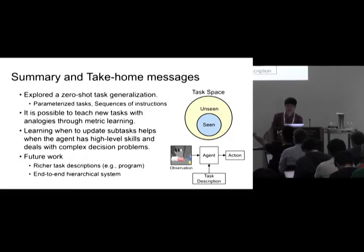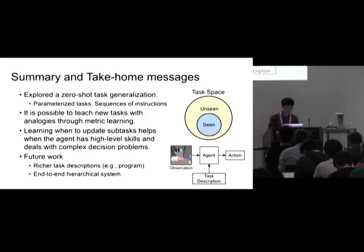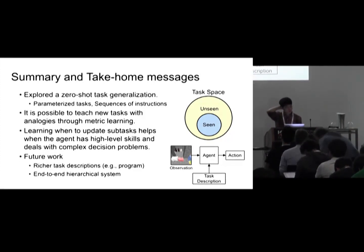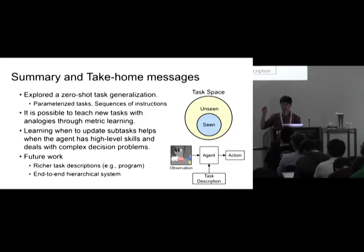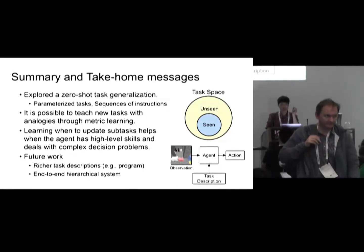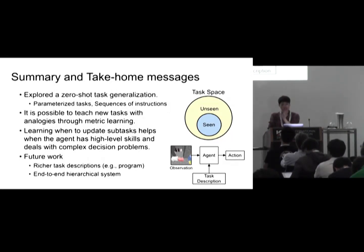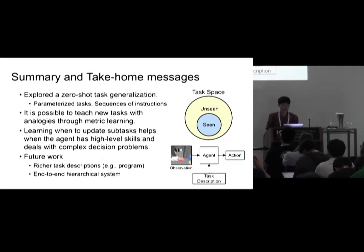Can you introduce a bit more about the richer task descriptions beyond the sequential tasks? In this work, the sequential instructions are quite limited in the sense that the agent has to execute them strictly sequentially. But we can think of richer descriptions, for example, some tree-structured programming language that can specify if-then-else statements, or loops and recursion. That can provide richer descriptions, allowing the agent to perform a much larger set of tasks by just following this programming language.